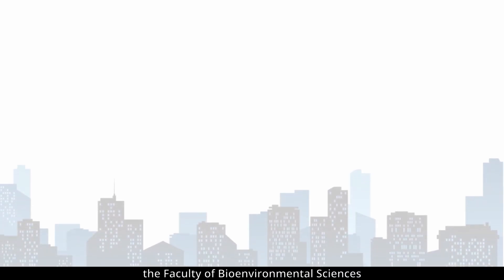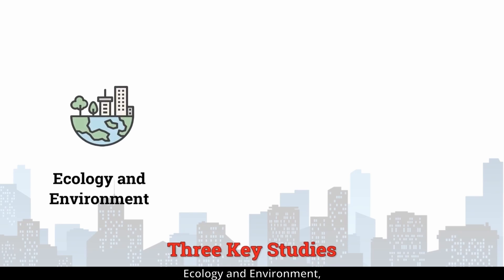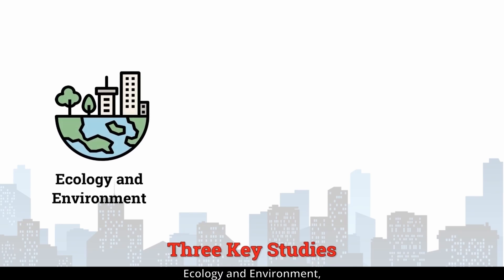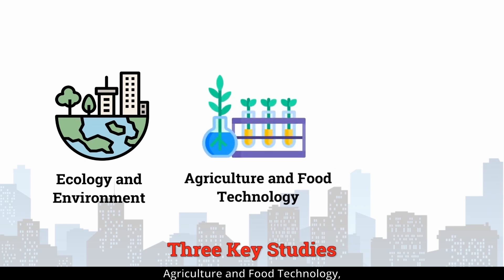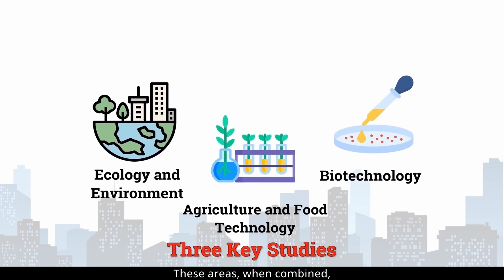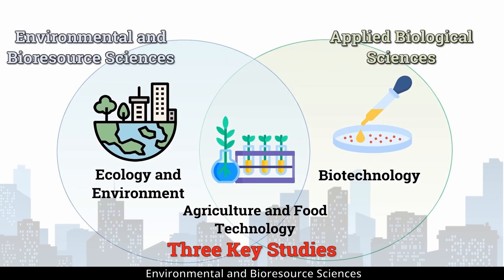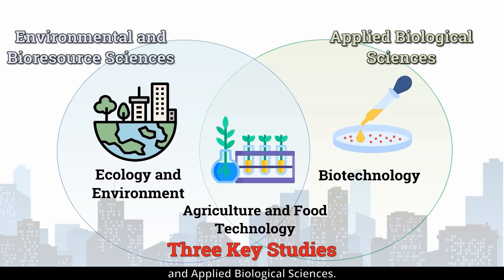At KUAS, the Faculty of Bio-Environmental Sciences encompasses three key areas of study: Ecology and Environment, Agriculture and Food Technology, and Biotechnology. These areas, when combined, form the Departments of Environmental and Bioresource Sciences, and Applied Biological Sciences.